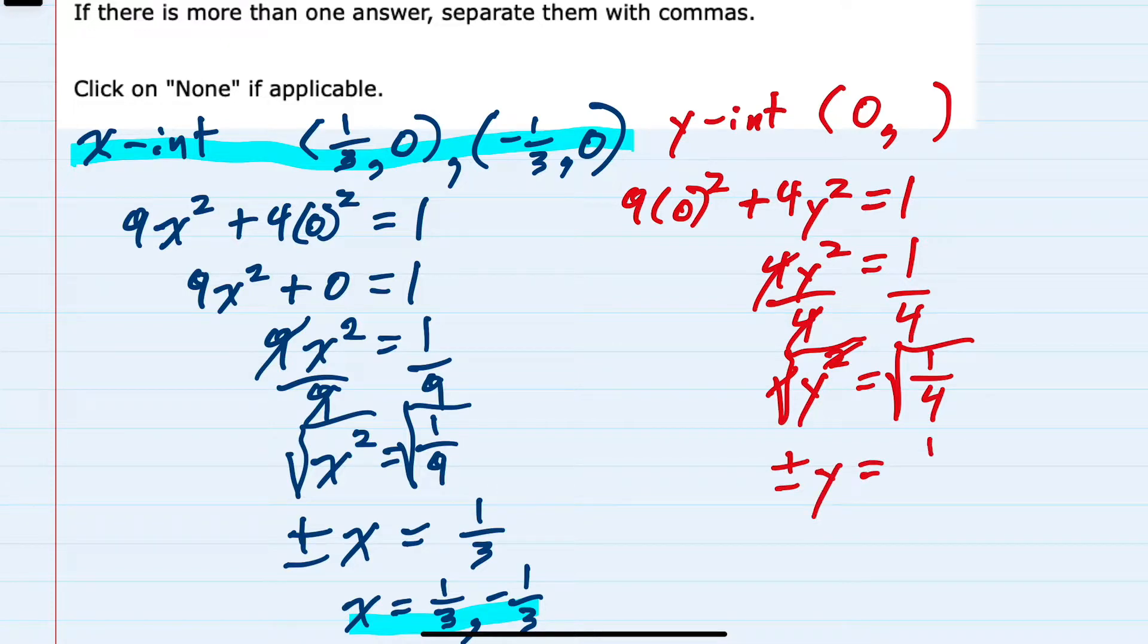The square root of 1 is 1, and the square root of 4 is 2. So plus or minus y equals 1-half means that y either equals 1-half or negative 1-half. So we found two y-intercepts as well: our y could be 1-half or we could have a y-intercept of negative 1-half.